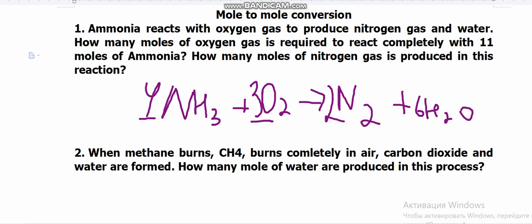Now let's answer the question: 11 moles of ammonia are given, and we need to find the moles of oxygen gas that react with it — call it x. From the equation, 4 moles of ammonia reacts with 3 moles of oxygen, so 11 moles reacts with x. We do cross multiplication: 11 multiplied by 3, divided by 4, gives approximately 8.25 moles of oxygen.